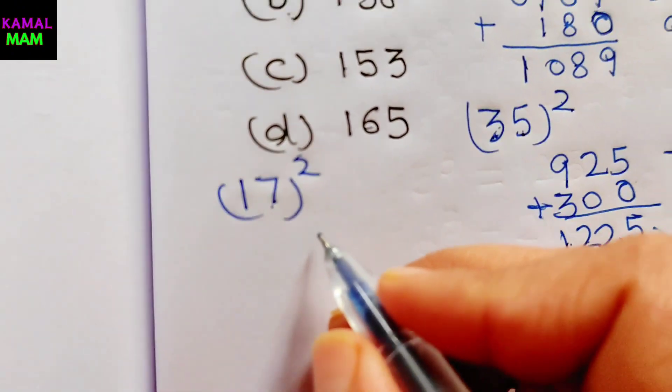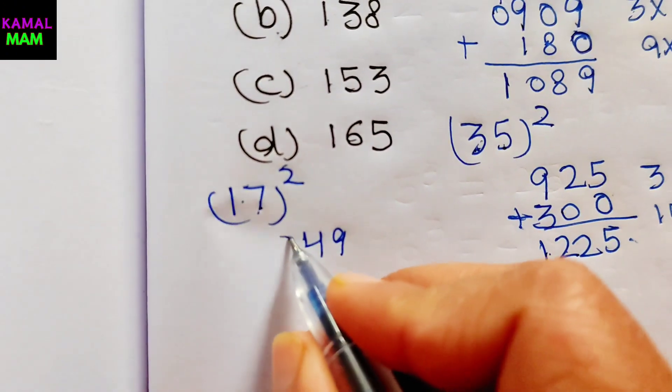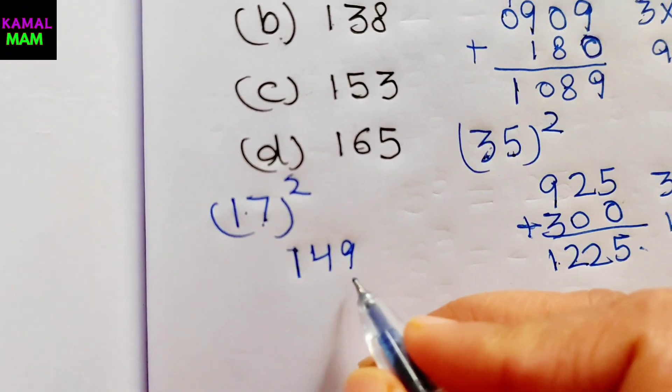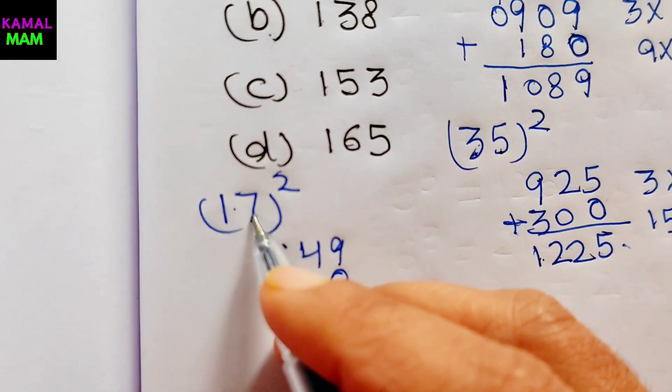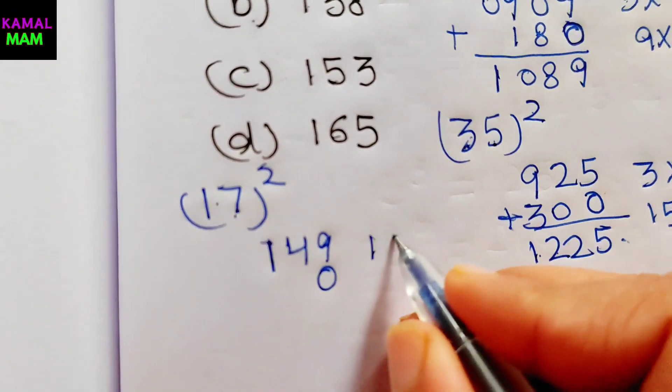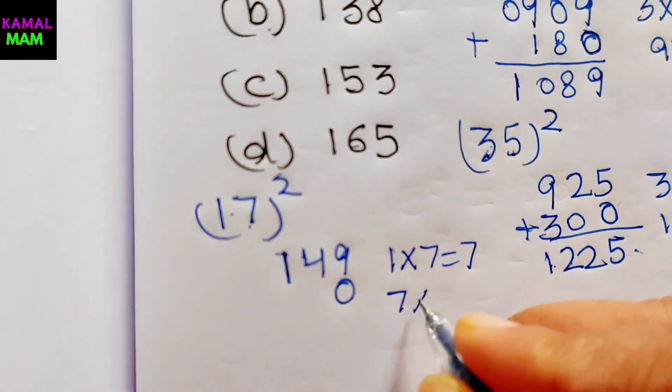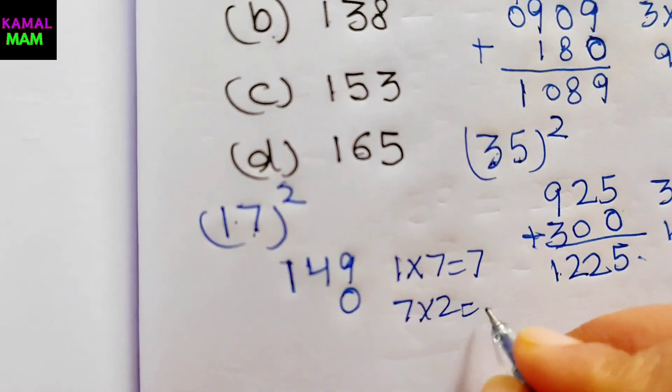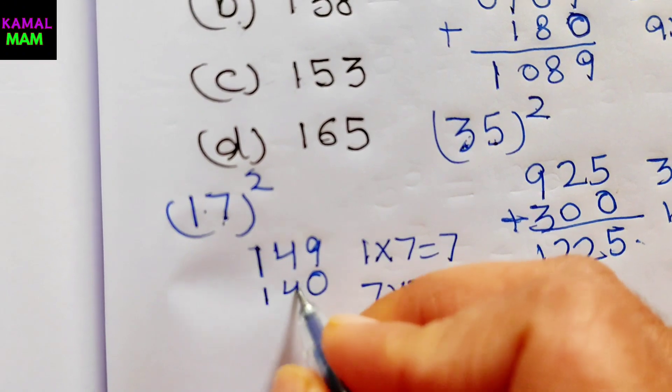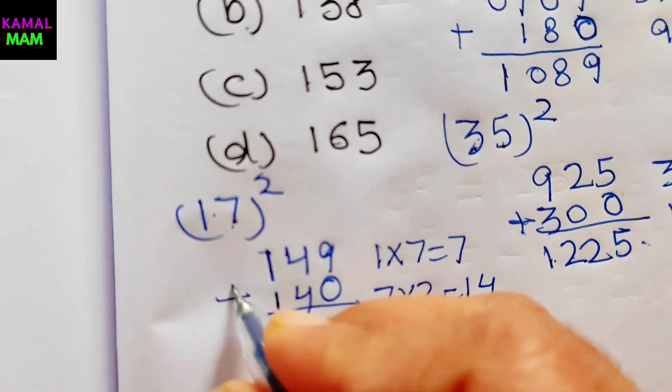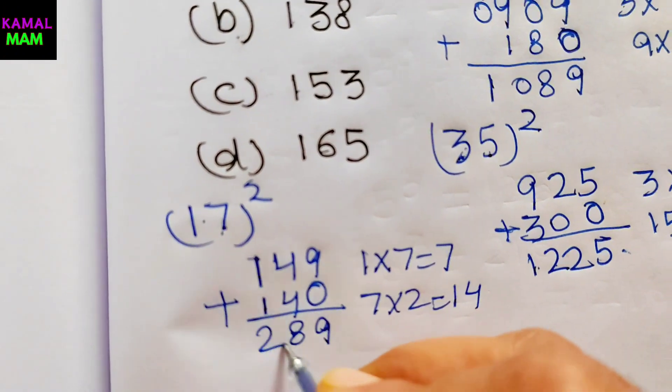It's 7 times 7, it's 49. 1 times 1 is 1. Now take 0 here. Now 1 times 7, it's 1 times 7 equals 7. Now 7 times 2 equals 14. So write it down here 14. Now just add them up, we get it's 9, 8, 2.